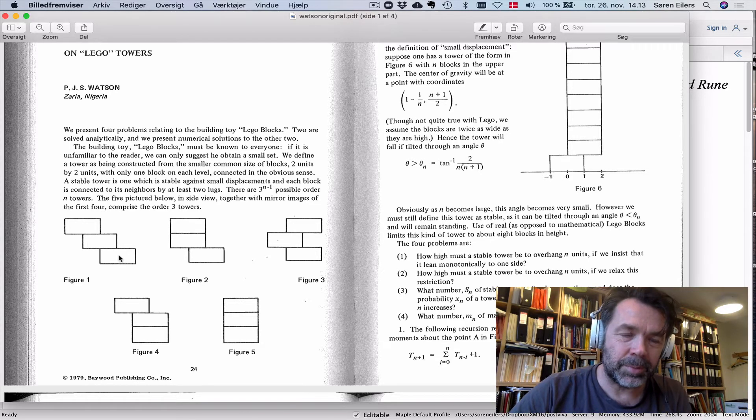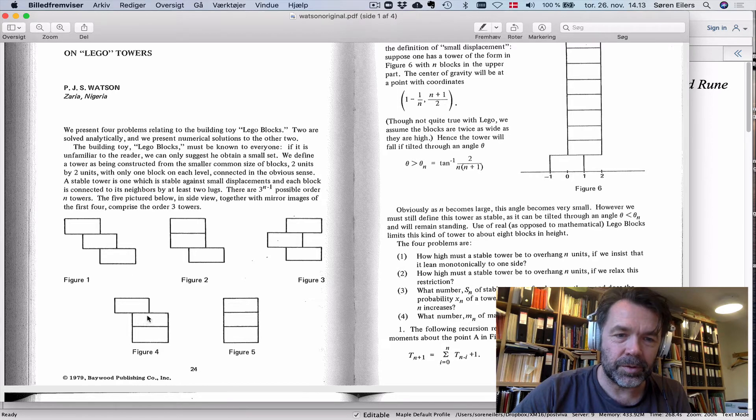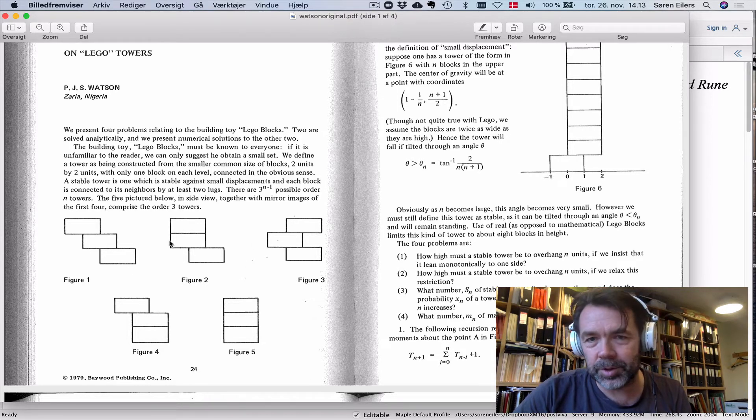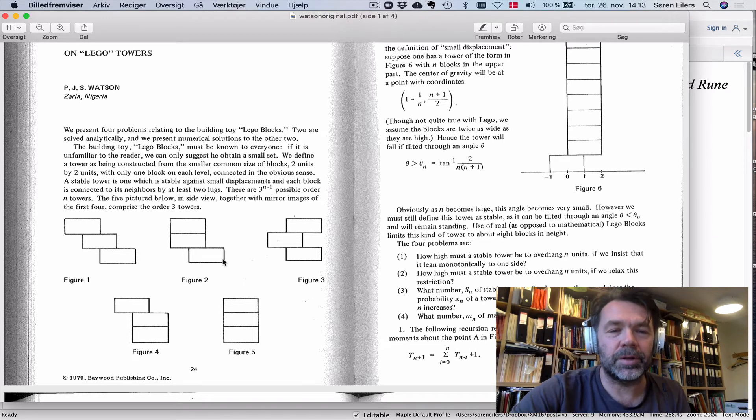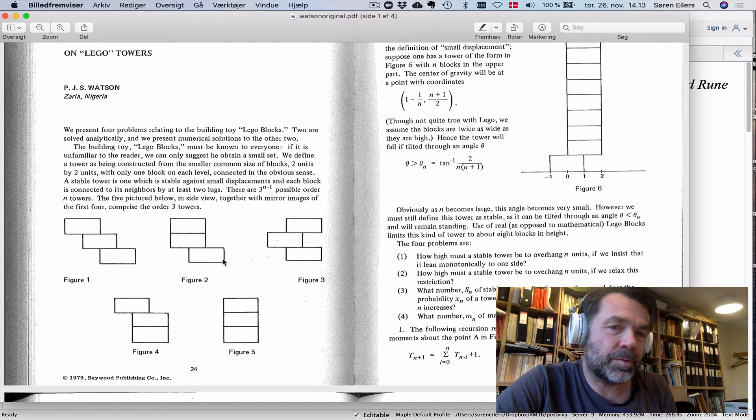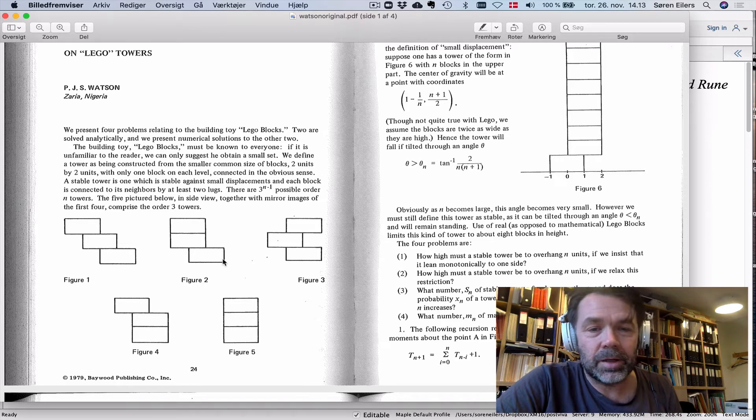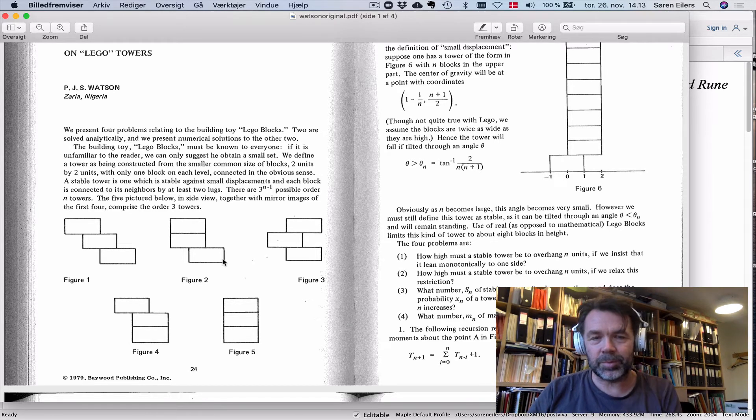After you place the bottom brick, you could put the next one to the left, straight on top, or to the right. This is a choice that you keep on having. There are 3^(n-1) choices because whenever you have a brick, there's three choices for where you can put the next one.